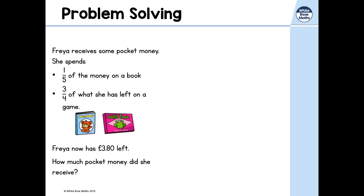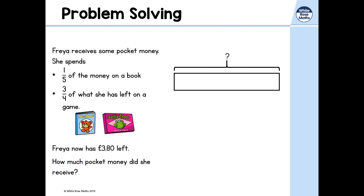Let's have a go at solving this. I might use a bar model to help me. The whole bar represents the pocket money she received at the start. She spends one-fifth on a book, so I'll divide the bar into five equal parts. One-fifth is spent on the book, and therefore four-fifths is what's left over.